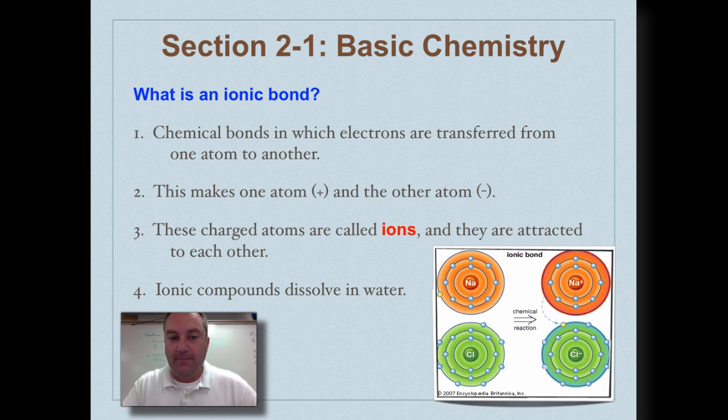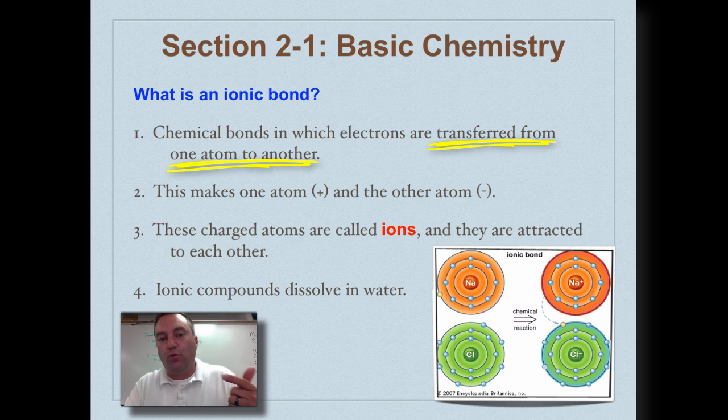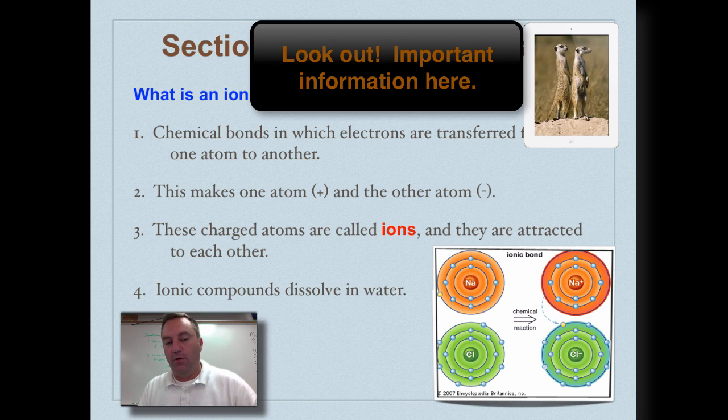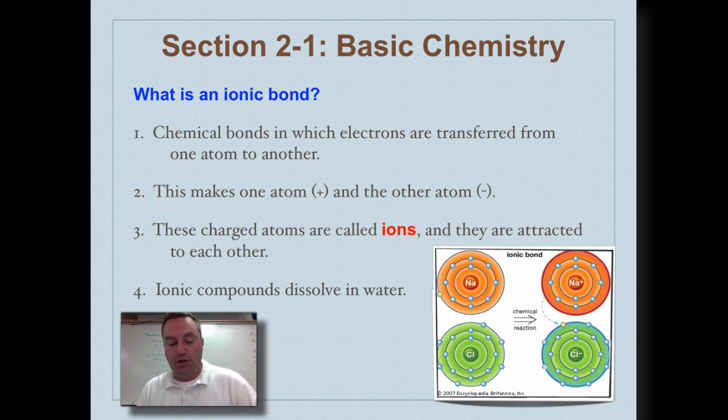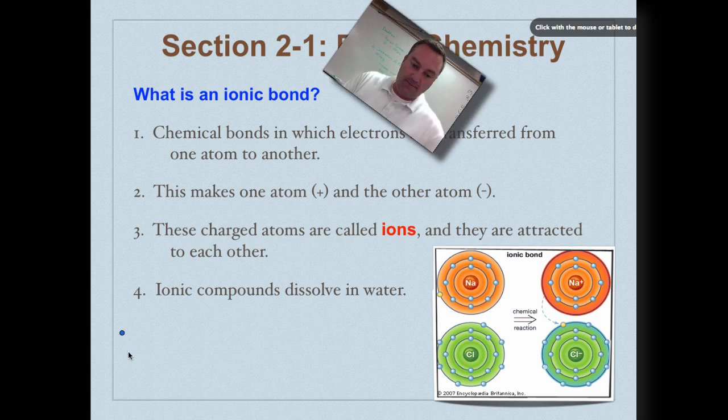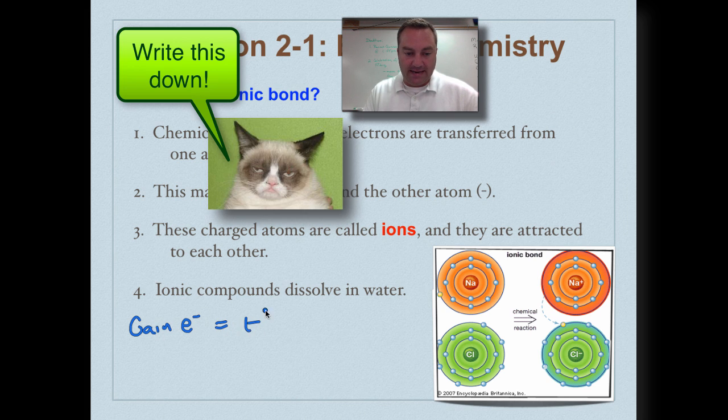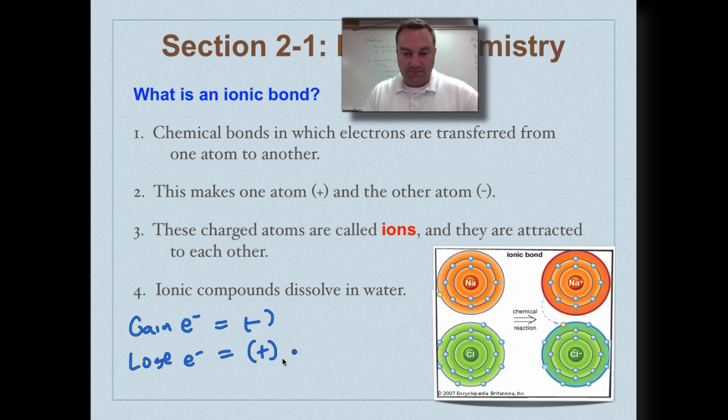Now, what is an ionic bond? An ionic bond is when electrons are transferred from one atom to another. Now, a couple of things I want you to understand is that when you gain an electron, you're going to become negative. And when you lose an electron, you're going to become positive.